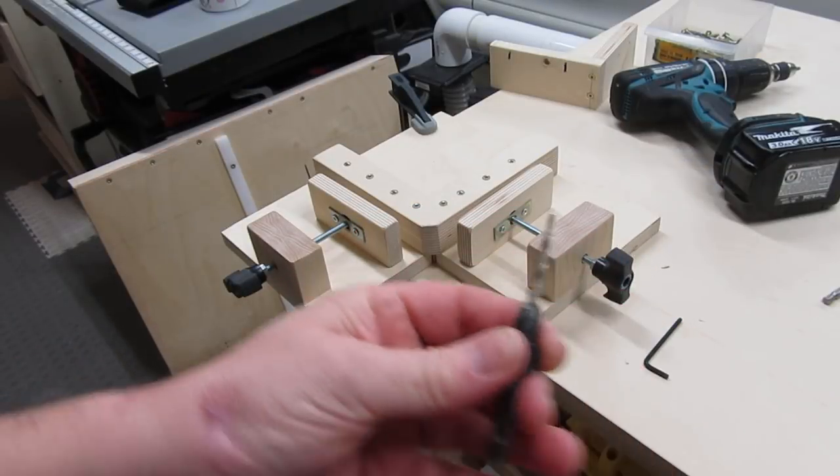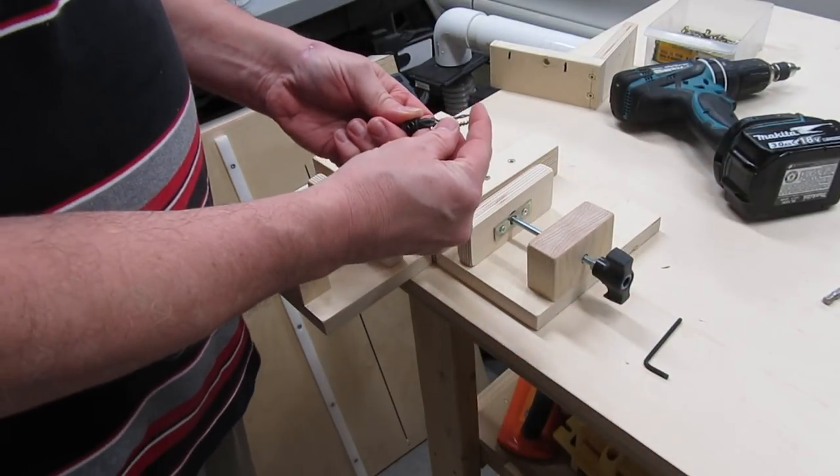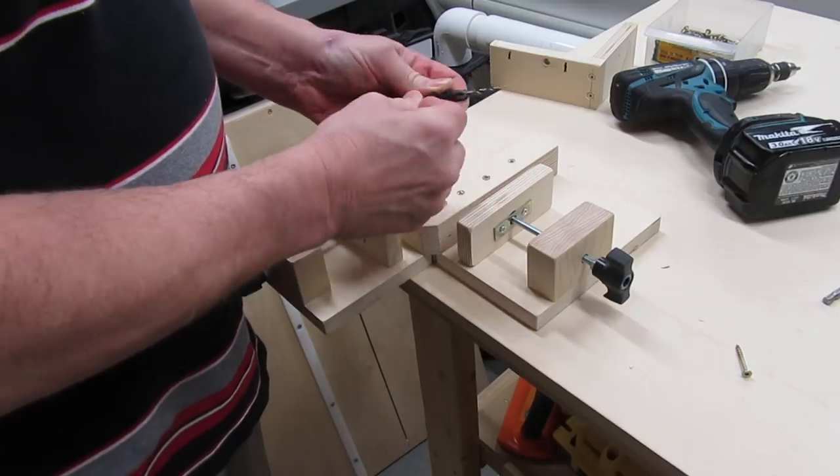The countersink can be moved up and down so you don't drill too deep. Just make sure you tighten down the set screws securely.